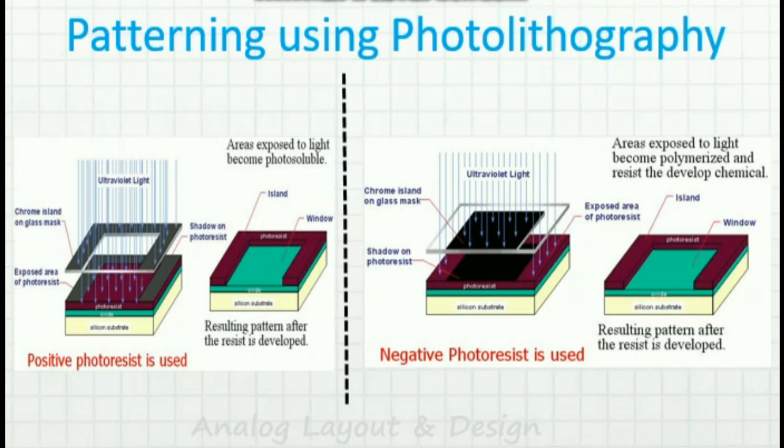Let us understand what a photoresist is. A photoresist is a material which, when exposed to light, will change its property. There are two types of photoresists — one is the positive photoresist and the other is the negative photoresist.